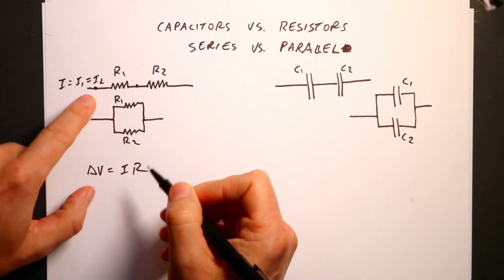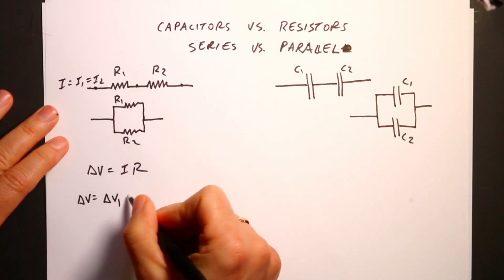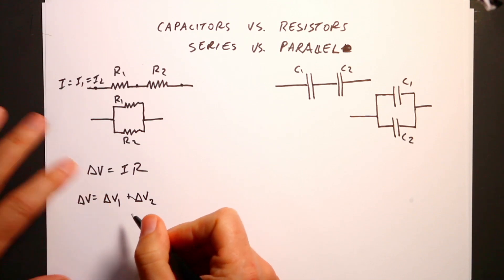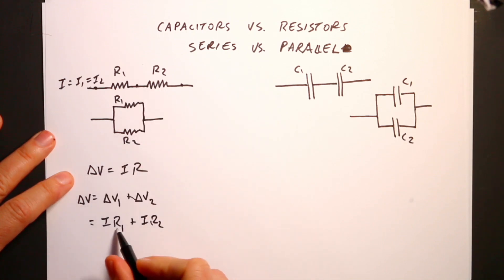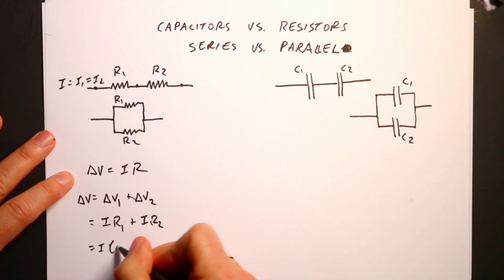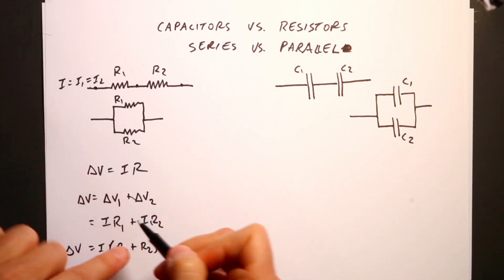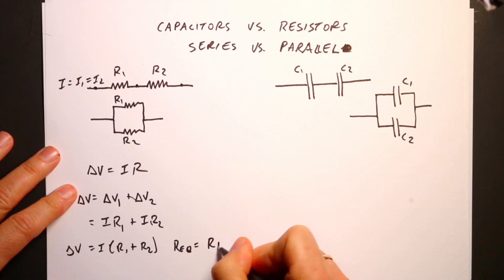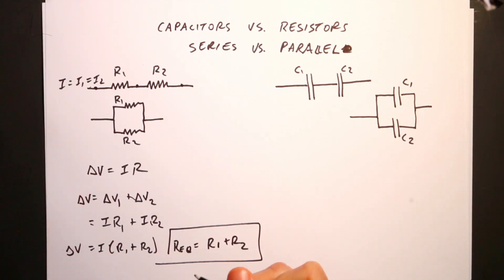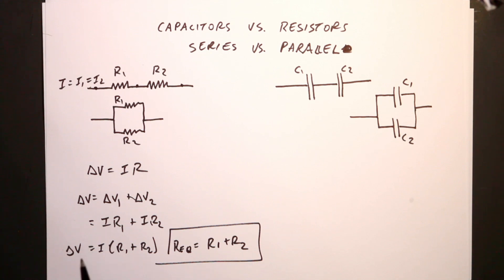If I want to take the voltage across the whole thing, delta V, it's going to be delta V1 plus delta V2. But delta V1 equals I times R1, plus delta V2 equals I times R2. I can factor out the I and get I times (R1 plus R2). That looks just like Ohm's Law if R equivalent equals R1 plus R2. In series, you just add up the resistors — for two, three, or any number of them.